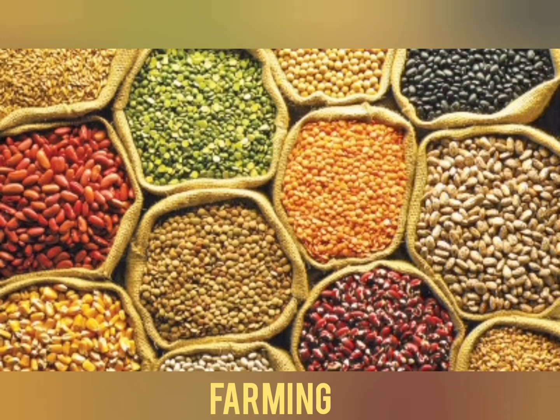The word agriculture comes from the Latin word 'ager' meaning field, and 'cultura' meaning care. So agriculture means the growing of plants or raising of animals for human use. Agriculture comprises activities essential in improving the environment for the growth of plants and animals.